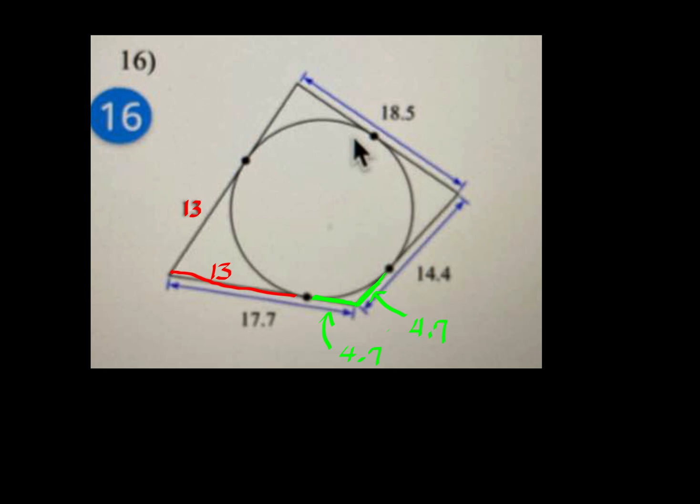And then, since the whole thing is 14.4, if we minus 4.7, so this portion is going to be, let me see, is it 9.7?